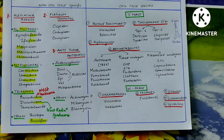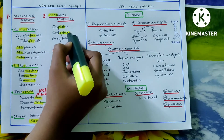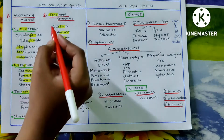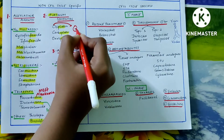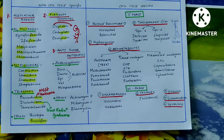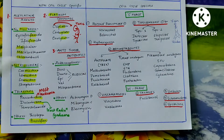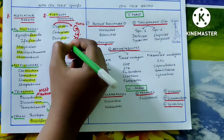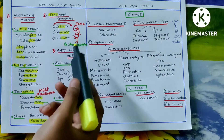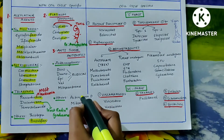Busulfan is composed of alkyl sulfonates, which is why it comes under alkylating agents. Coming to platinum compounds — they have 'platin' in them: cisplatin, carboplatin, oxaliplatin. Cisplatin causes nephrotoxicity as well as neurotoxicity. The treatment for cisplatin-induced nephrotoxicity and neurotoxicity is amifostine.